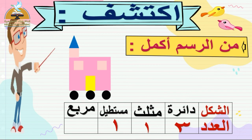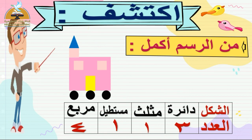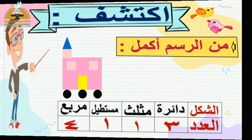بيقول لي المربع. يلا نعد كده مع بعض: عندي كام مربع؟ يلا عد معايا: واحد، اثنان، ثلاثة، والمربع الكبير. يبقى كده أربع مربعات عندي.